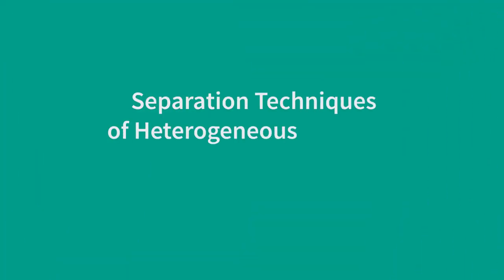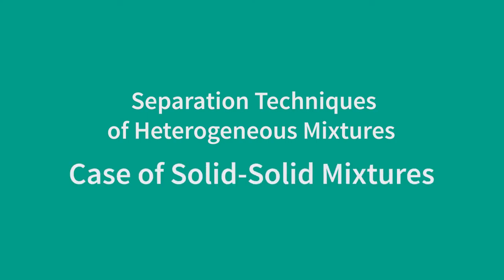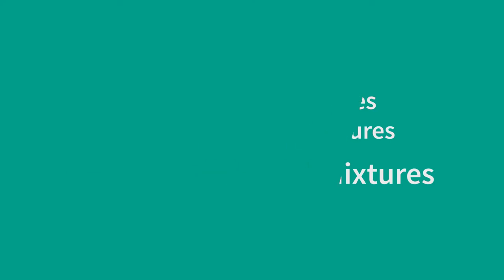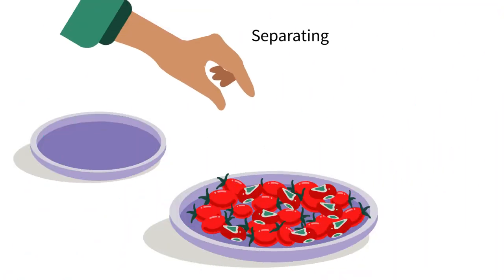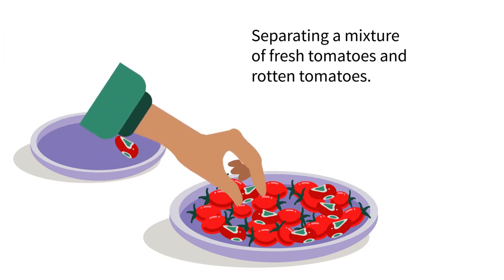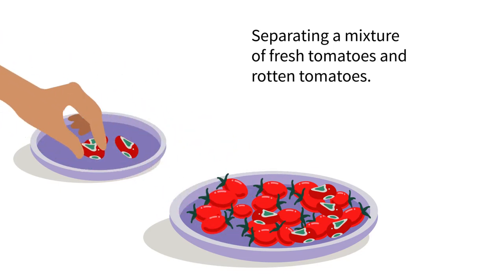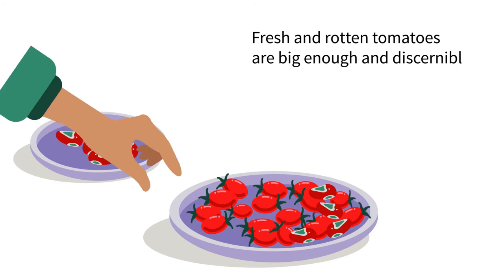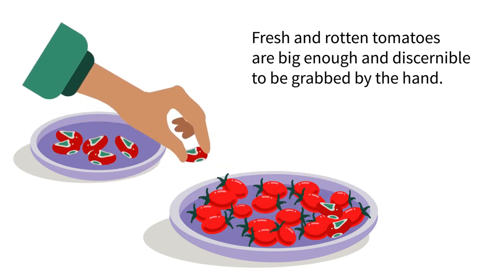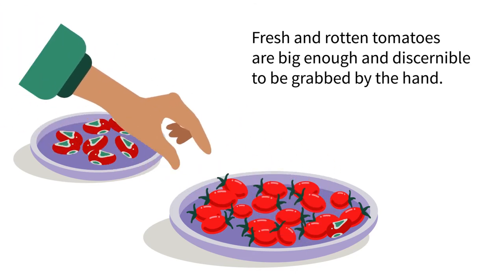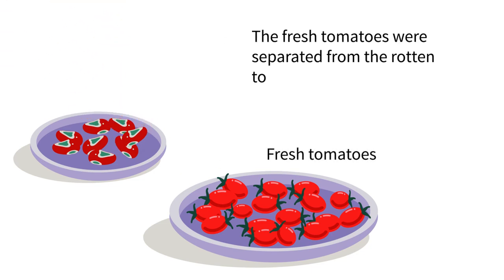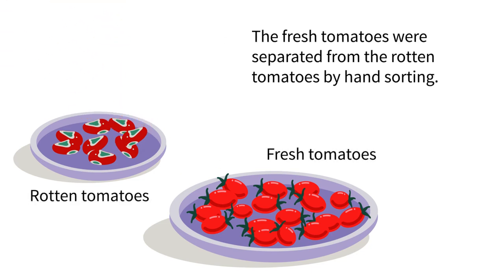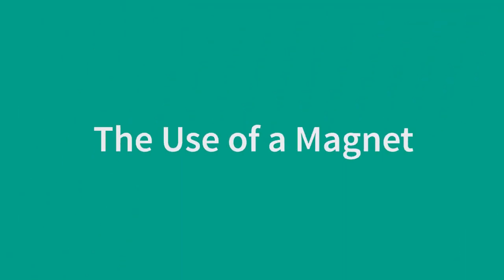Separation techniques of heterogeneous mixtures: the case of solid-solid mixtures. Hand sorting: separating a mixture of fresh tomatoes and rotten tomatoes. Fresh and rotten tomatoes are big enough and discernible to be grabbed by hand. The fresh tomatoes were separated from the rotten tomatoes by hand sorting. The next technique is the use of a magnet.